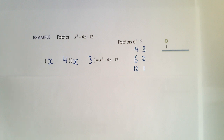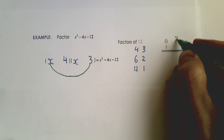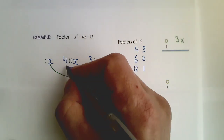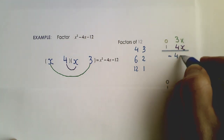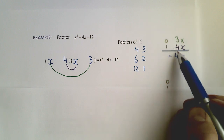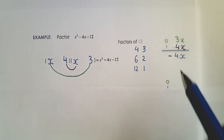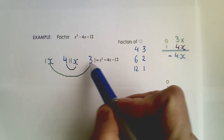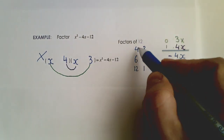I write 4 and 3 in the brackets and do the double loop. Outside gives me 3x; inside gives me 4x. I need a combination to give the middle term, negative 4x. Adding gives 7x; subtracting one way gives negative 1x; the other way gives positive 1x; making both negative gives negative 7x. None of these work, so this factor pair is incorrect. That's why the method is called guess and check — sometimes the first guess doesn't work.